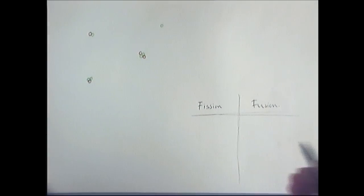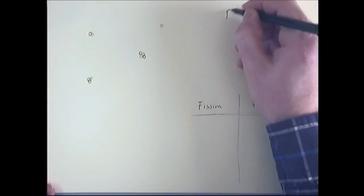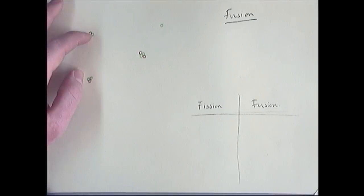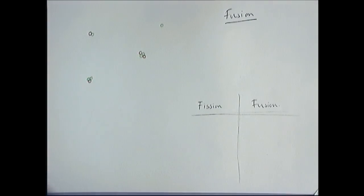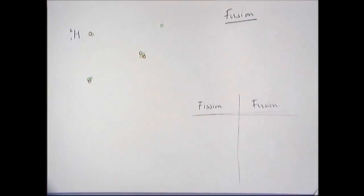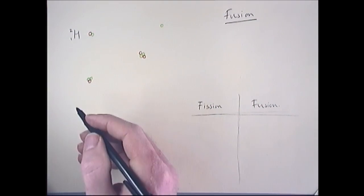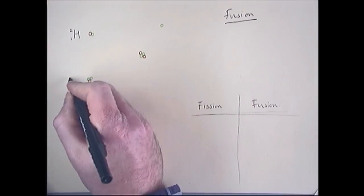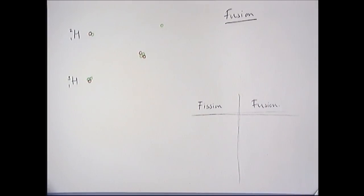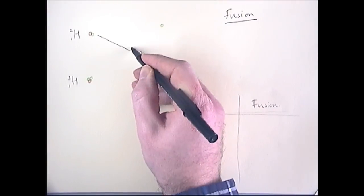The next type of reaction you need to be well aware of is nuclear fusion. To fuse something together is to join it together, so this is the joining together of small nuclei. For example, in this case, deuterium, which is hydrogen but with one extra neutron, and tritium. This is the most common fusion.